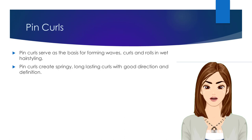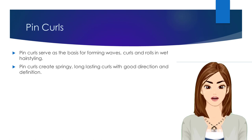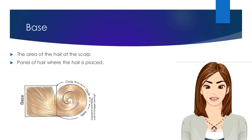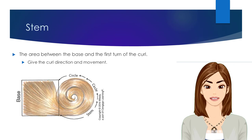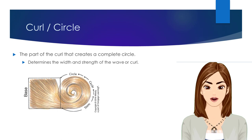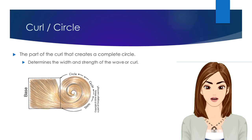Pin curls serve as the basis for forming waves, curls, and rolls in wet hairstyling. Pin curls create springy, long-lasting curls with good direction and definition. Pin curls are made up of three principal parts: the base, the stem, and the circle. The base is the area of the hair on the scalp where the hair for the curl is picked up, and also the panel of hair where the hair will be placed once the curl is complete. The stem is the area between the base and the first turn of the curl, and gives the curl direction and movement. The circle is the part of the curl that creates a complete circle or multiple circles, and determines the width and strength of the wave or curl.